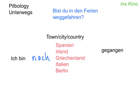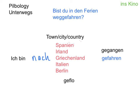Now, gegangen is a perfectly legitimate past participle to use, but perhaps slightly more fitting would be if we used the verb for 'to travel' or 'to drive', which is gefahren. And there's one more to be aware of, which is 'to fly' — geflogen — because you probably wouldn't drive all the way to Greece. So: ich bin nach Spanien gegangen, but you'd probably say ich bin nach Spanien gefahren, or ich bin nach Italien geflogen — I flew to Italy.